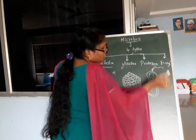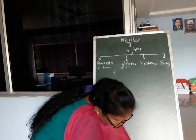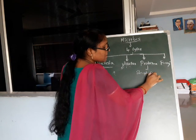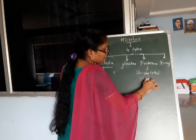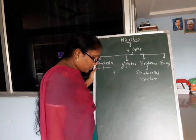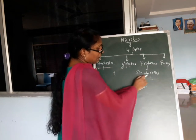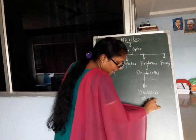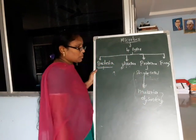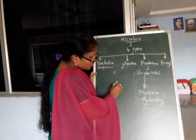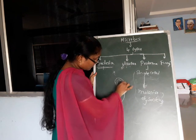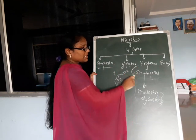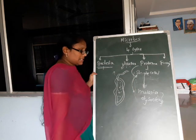Protozoa structure — protozoa is a single-celled microorganism. This protozoa causes malaria and dysentery. These two diseases are caused by protozoa.